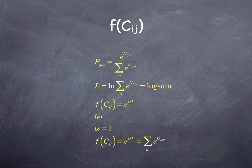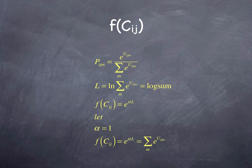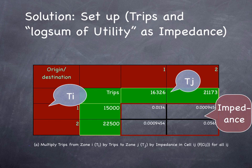If you have viewed the mode choice video, this will look familiar. The probability of choosing a mode depends on the utility of that mode and the utility of all other modes. The denominator of the first line is basically the log sum. It is the log of the sum of the utilities of all the modes serving an OD pair, and thus can serve as impedance.